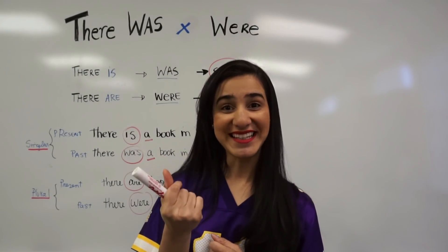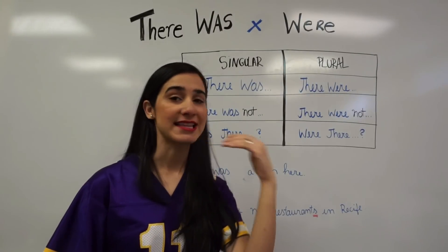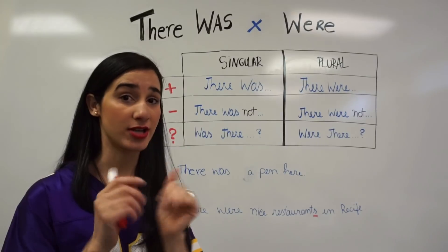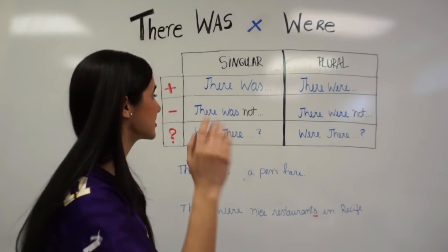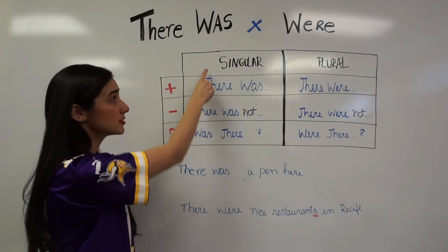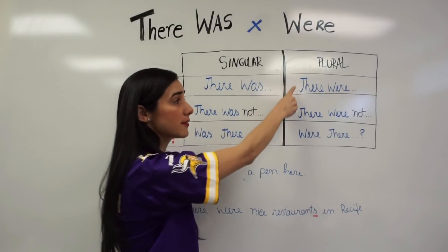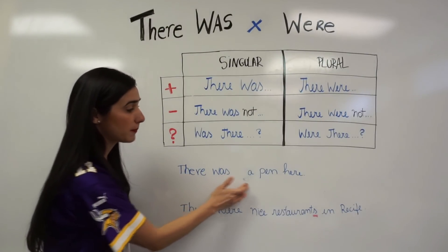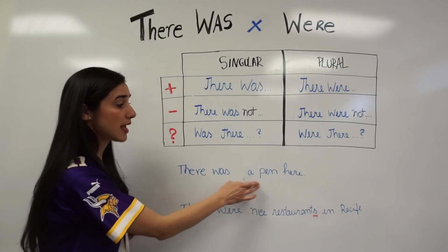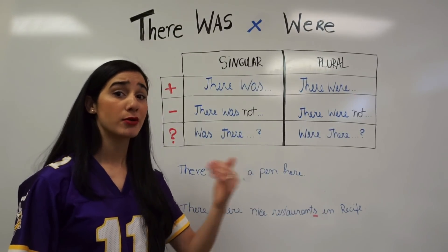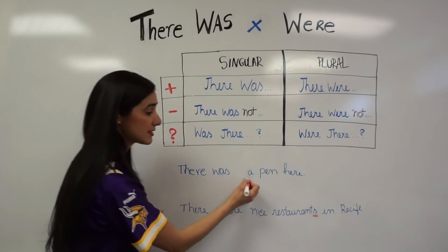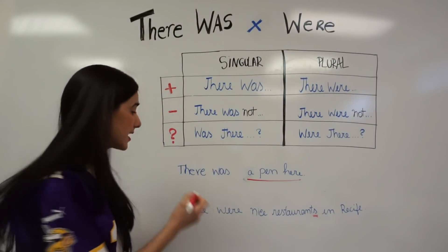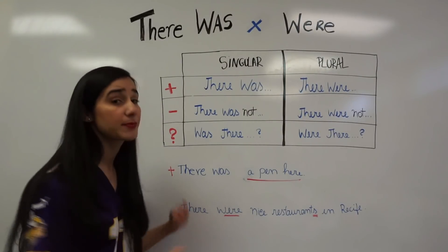Now let's look at the sentence structure. To form affirmative, negative, or interrogative sentences is very simple — just follow along. For an affirmative singular sentence, use 'there was,' then complete the sentence: 'There was a pen here,' 'There was a book on the table,' 'There was a guy in front of my house.' You use singular objects with 'there was.'